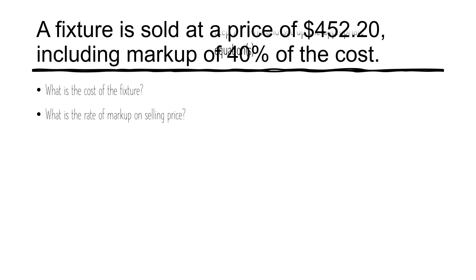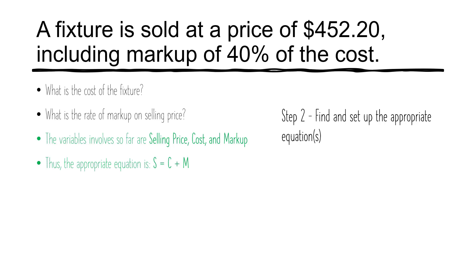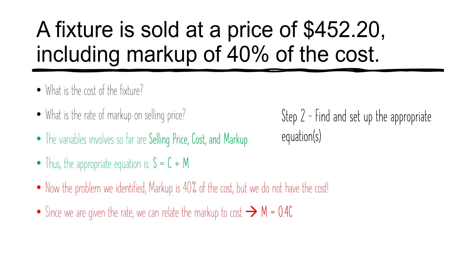The next step is to figure out what is the appropriate equation. The variables given are selling price, cost, and markup. There is an equation relating selling price to cost and markup: S = C + M. Now we still have the problem that markup is 40% of the cost. What we can do is set up a mini equation: M = 0.4C. 0.4 is the equivalent of 40%, so this represents the same statement as a mini equation.